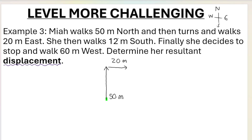Then she walks 12 meters south. More or less to scale — the 12 meters must obviously be shorter than the 50 meters. 12 meters south, so that's down. Take note how I'm drawing it: head to tail every single time — head to tail, head to tail.